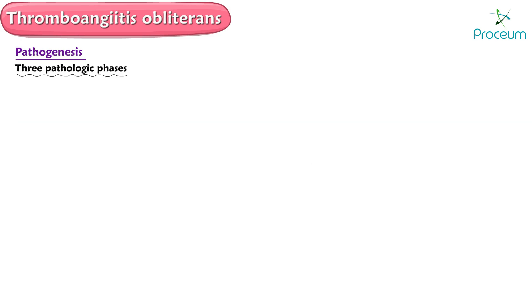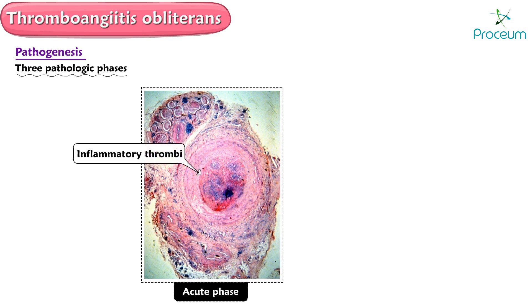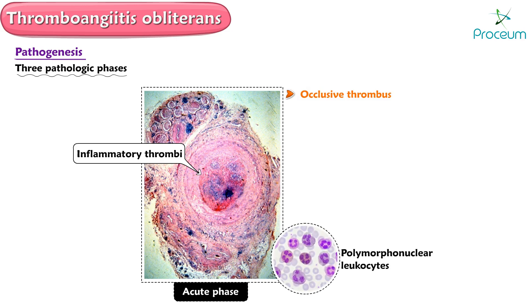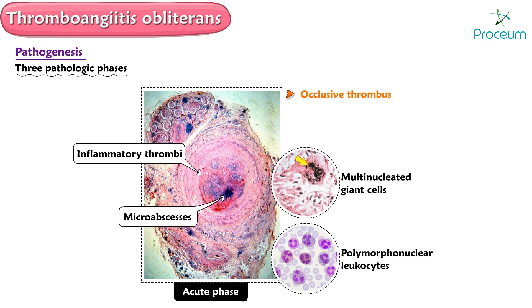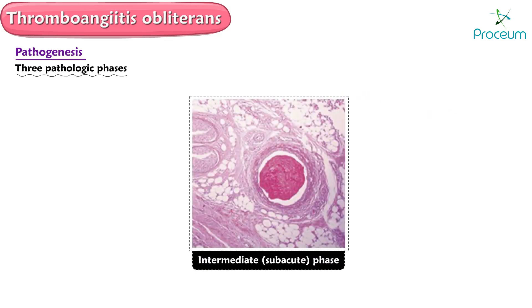Three pathologic phases are described. In the acute phase, inflammatory thrombi develop in the arteries and veins, typically of the distal extremities. The thrombus is occlusive and polymorphonuclear leukocytes, micro-abscesses, and multinucleated giant cells may be present, but there is no evidence of fibrinoid necrosis. The internal elastic lamina is intact. The intermediate or subacute phase is characterized by progressive organization of the thrombus in the small to medium-sized arteries and veins.